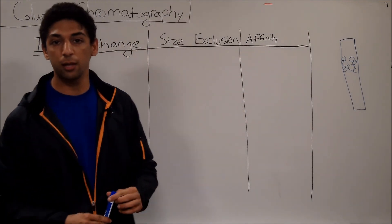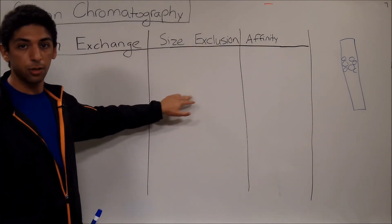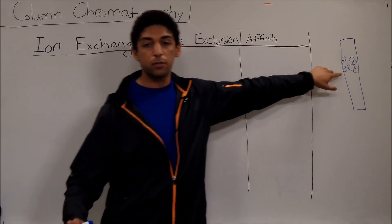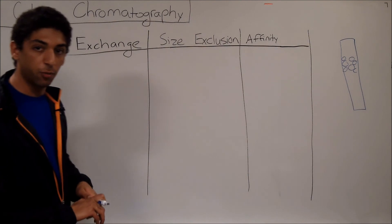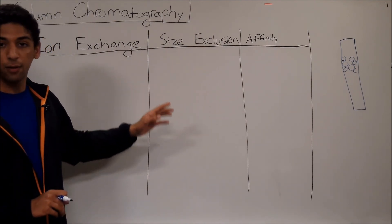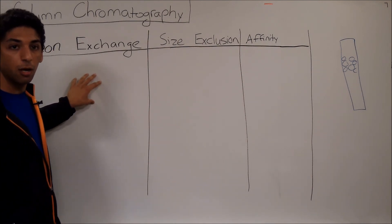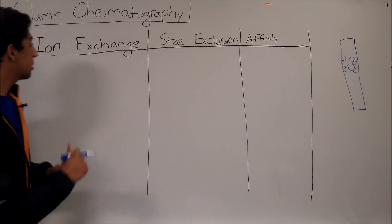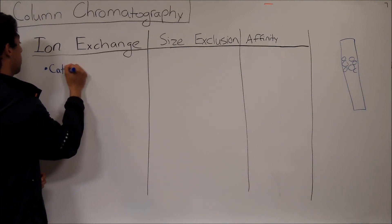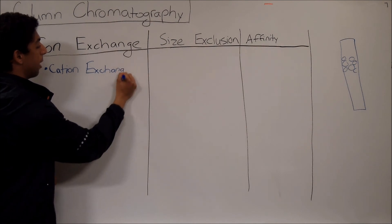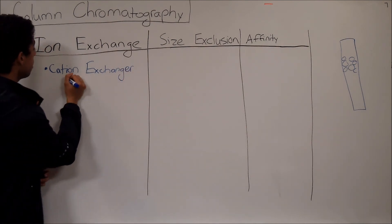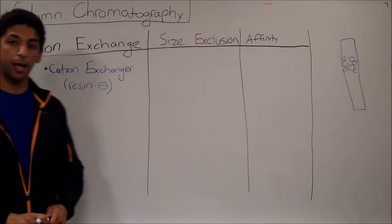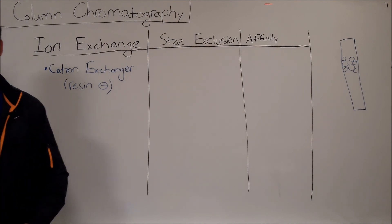We commonly work with three types in the lab: ion exchange, size exclusion, and affinity. For ion exchange, the resin inside the column will be charged — either positive or negative. To make things easier, let's imagine the resin is negative. When it's negative, positive molecules flowing through the column will bind to it. That is called a cation exchanger — a cation exchanger binds cations, which are positively charged molecules, meaning the resin has to be negatively charged.